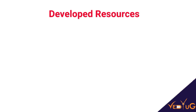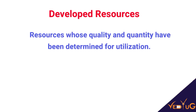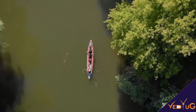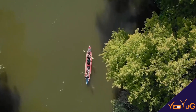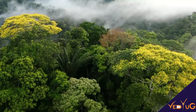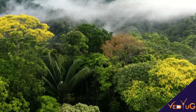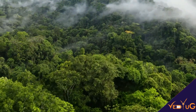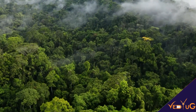Developed resources are those about which we have complete information regarding their quality and quantity, and we also have the technology to utilize them. Examples of developed resources are rivers, lakes, and forests. Forests are the richest source of developed resources as they provide fruit, shelter, and wood to human beings.